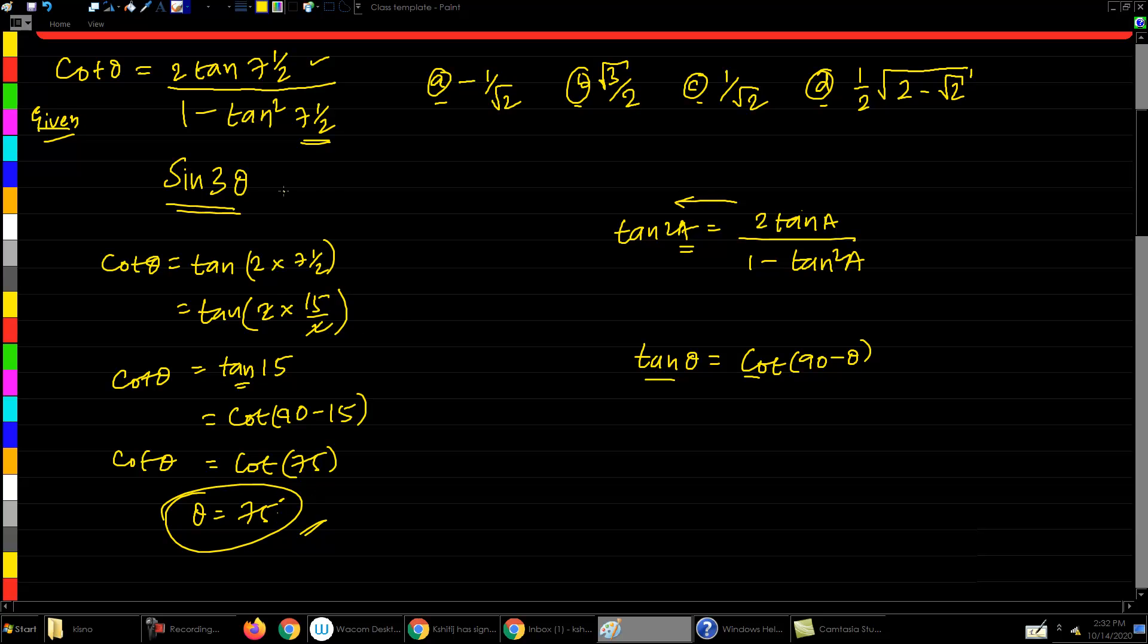Now we have to take 75 and substitute this. sin of 3θ, sin of 3 times 75, and sin of 3 into 75 is 225. And we can write this as 180 plus 45. What is this? Which quadrant will be in 3rd quadrant. 225 angle is in 3rd quadrant, and this angle we have taken as 45 degrees, 180 plus 45.